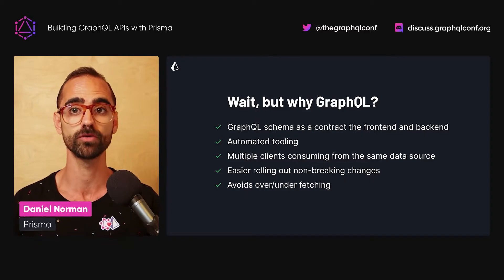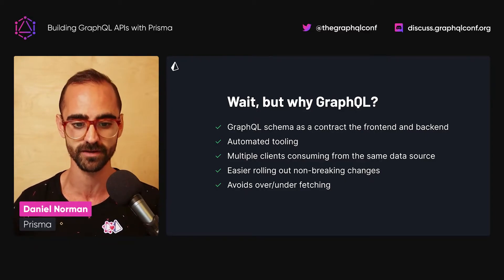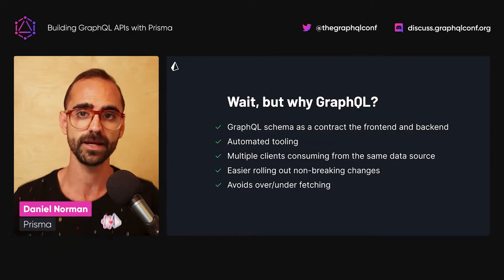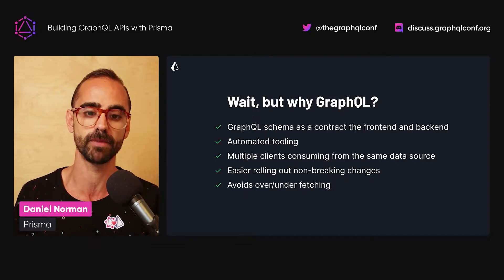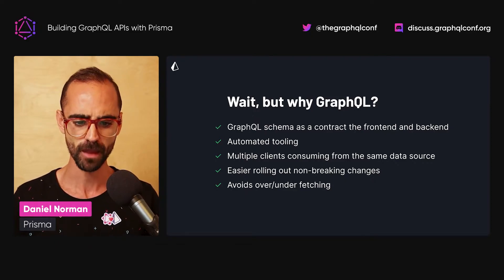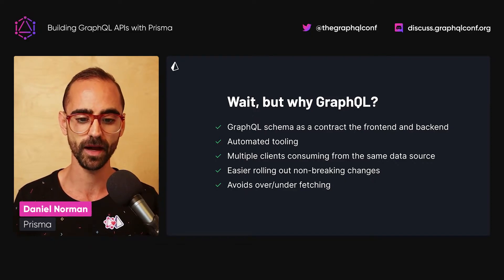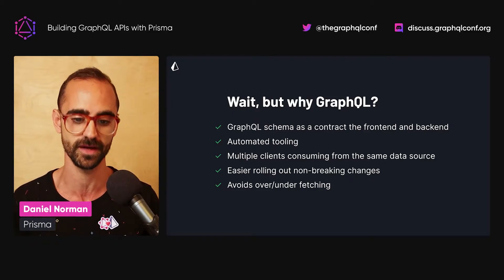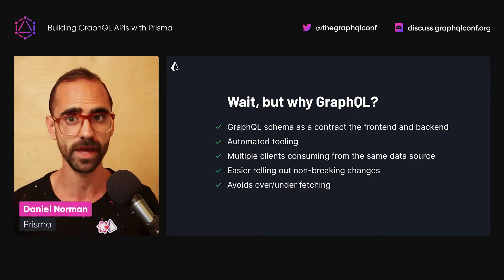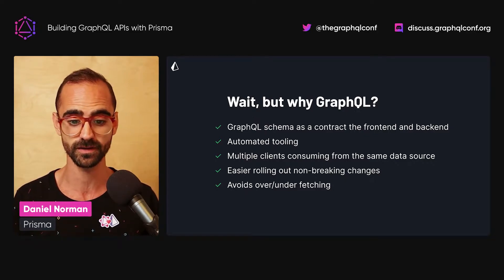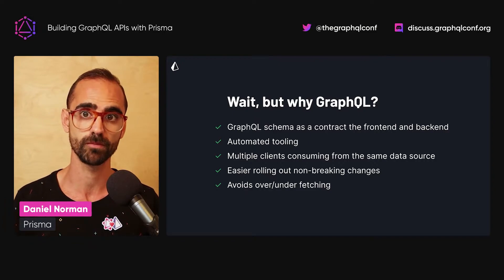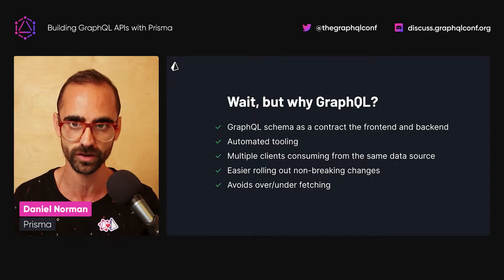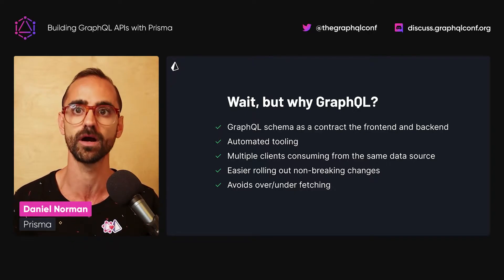Then we have multiple clients consuming from the same data source. Imagine you have an iOS app, an Android app, and a web client, each developed independently by a different team. By having a GraphQL API, you allow each team and each client to consume the exact data it needs. It's also easier to roll out non-breaking changes rather than versioning — a common approach in REST APIs — and additive non-breaking changes allow for this continuous evolution.